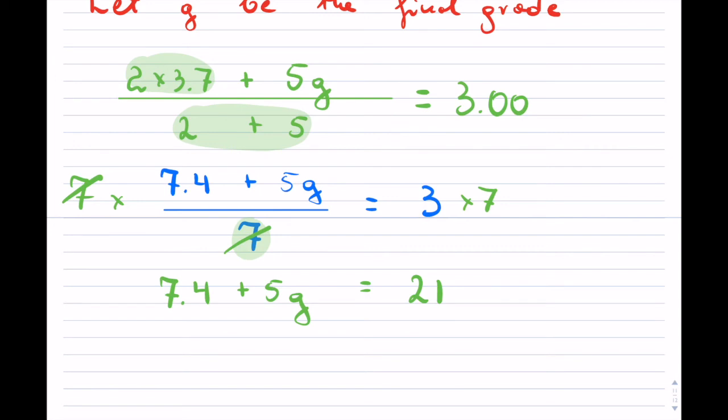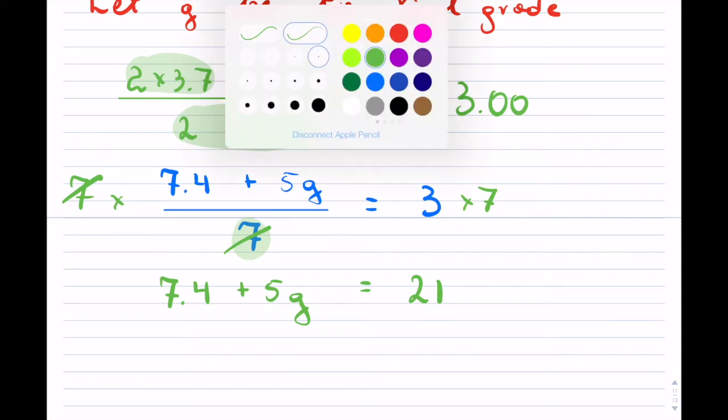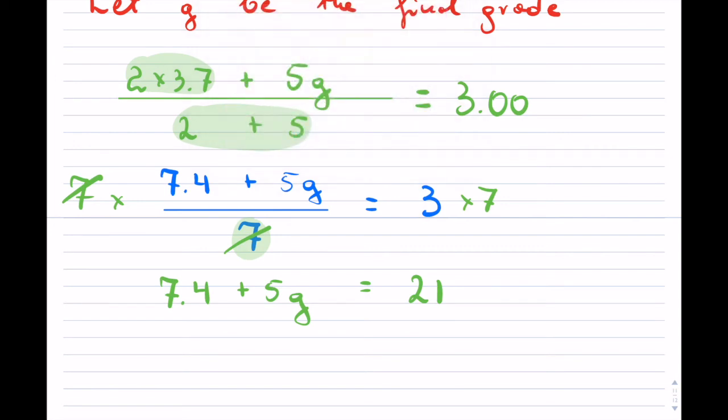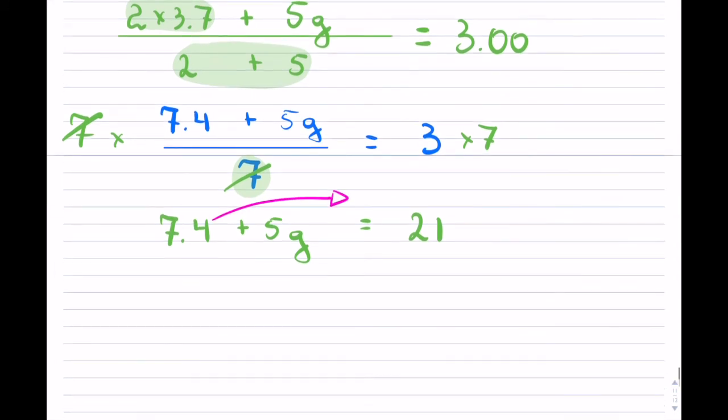And it will leave me with 7.4 plus 5G equals to 21. And hey, now it's much simpler. So what I can do next is I can shift over the 7.4 to the other side, which is going to give me 5G. So that will stay. And 21 minus 7.4. So this is what I have.